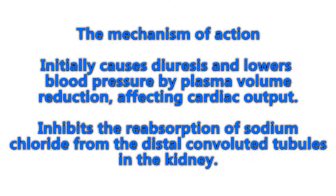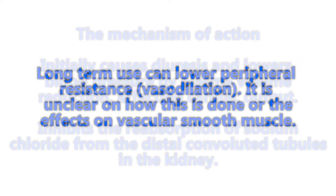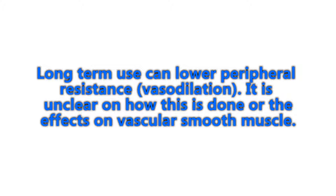The mechanism of action for thiazide diuretics is initially causing a diuresis and lowering blood pressure by plasma volume reduction affecting cardiac output. This inhibits the reabsorption of sodium chloride from the distal convoluted tubules in the kidney. The long-term use of this medication causes lowering of peripheral resistance, or vasodilation.